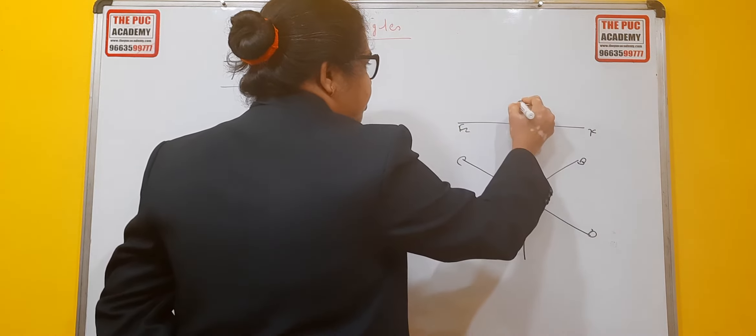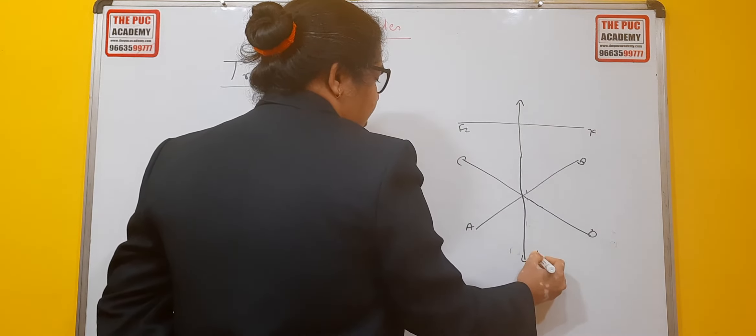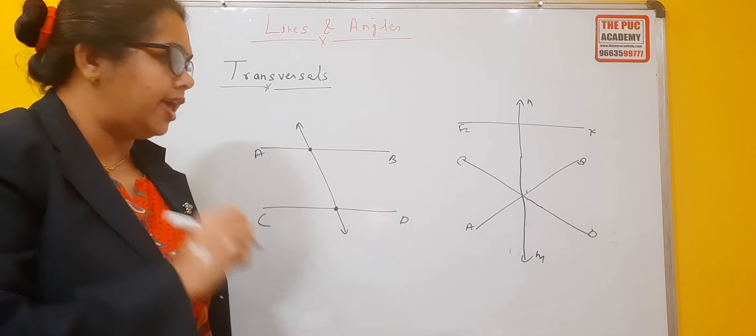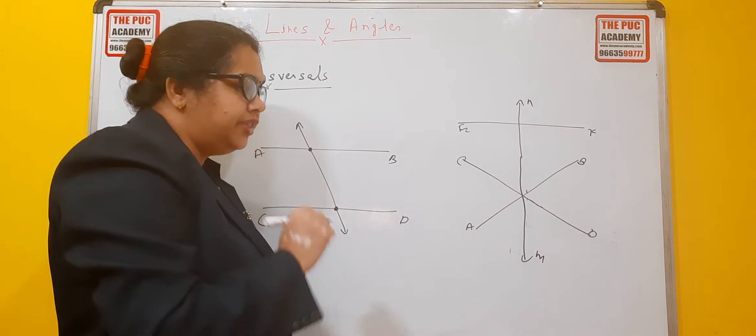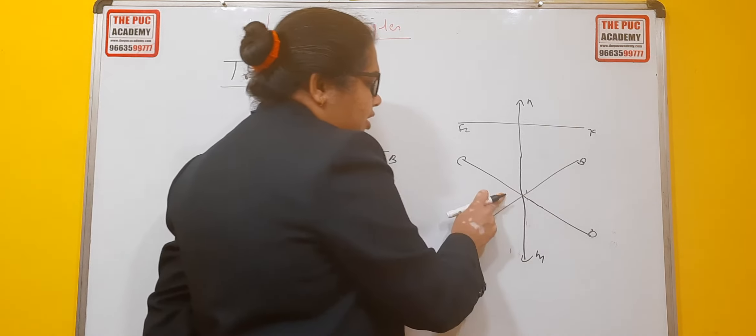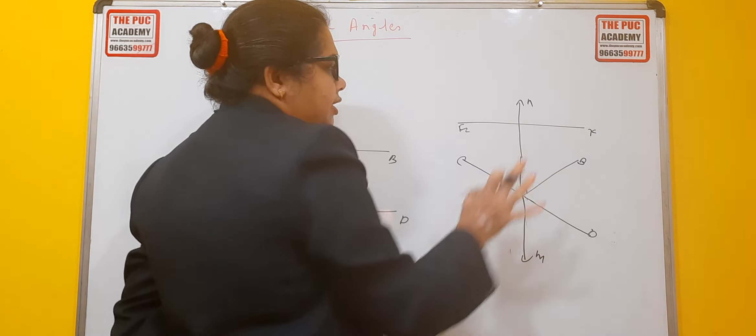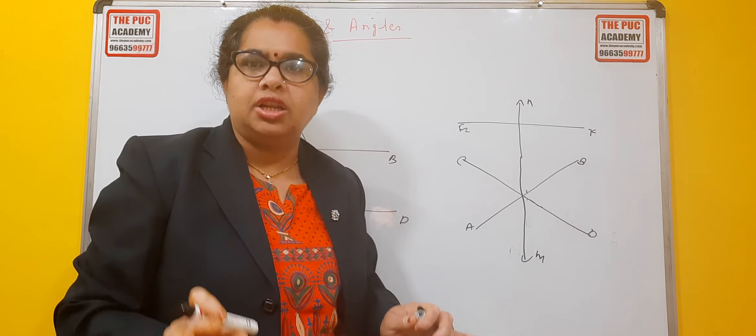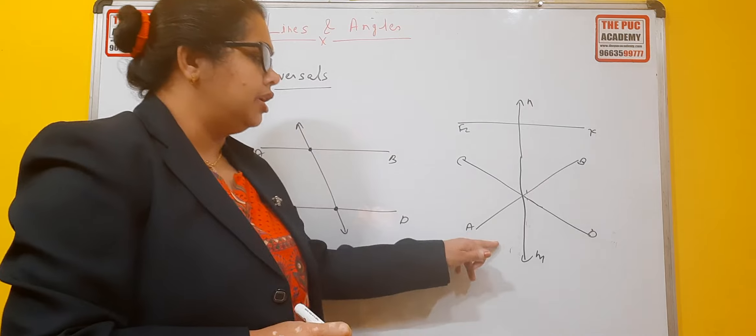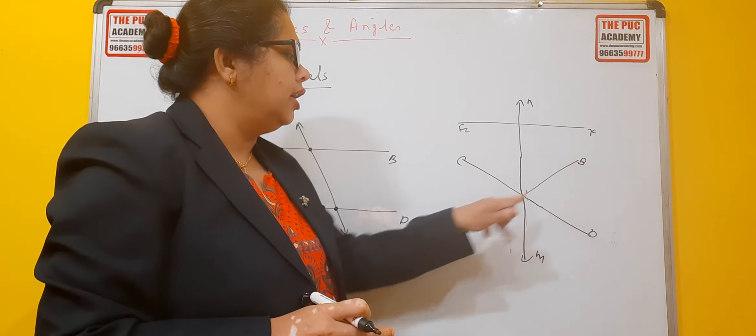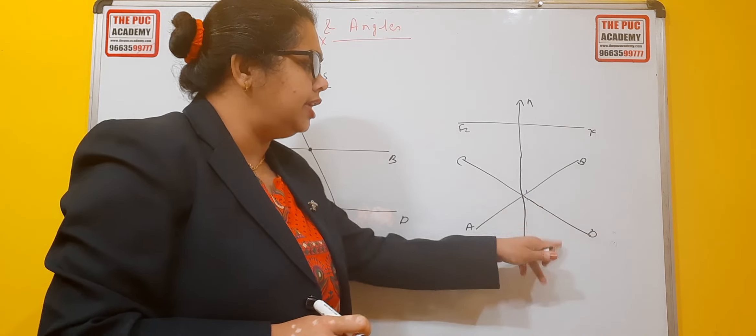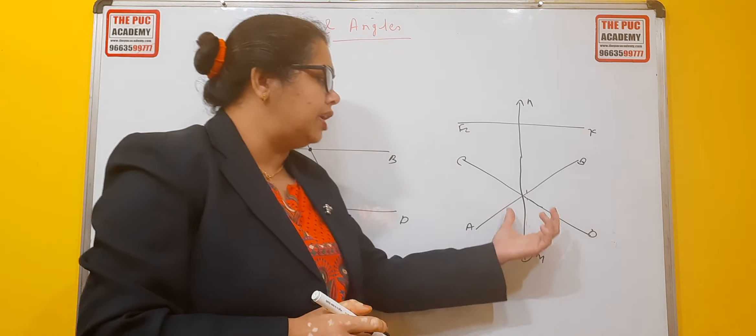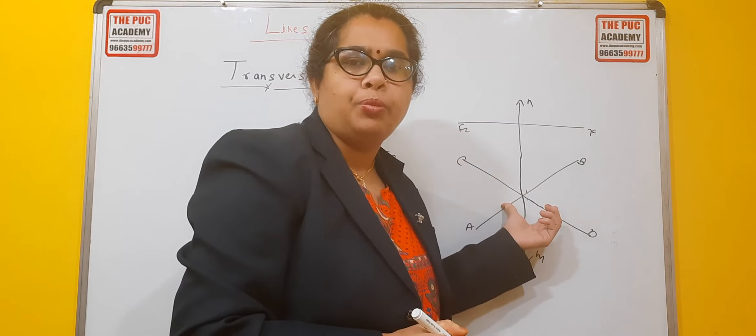And the transversal is here, M, N. So transversal here is M and N. In this case, your transversal M, N is not a transversal. M, N is not a transversal because it does not intersect line A, B and C, D at different points. It intersects at only one common point.